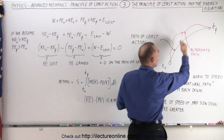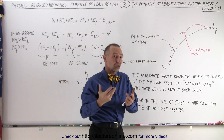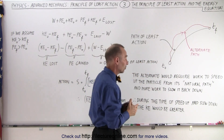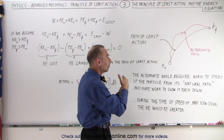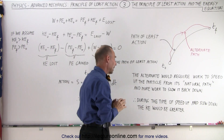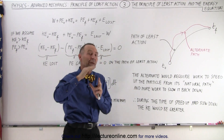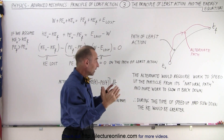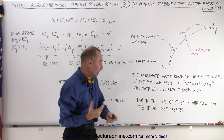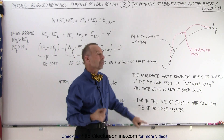In order to end at the same location, you would then need to put in some work to slow it down, otherwise you get there too fast. So work would be put in to go faster and work would be put in to slow it back down. But during that time that it's sped up and before it slows back down, the average velocity would be greater and therefore the kinetic energy would be greater.